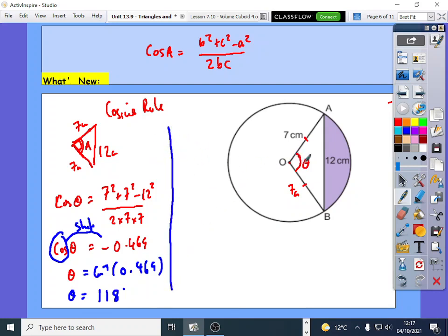Now, this angle is 118 degrees. So first of all, I'm going to work out, like we did before, the area of the sector.